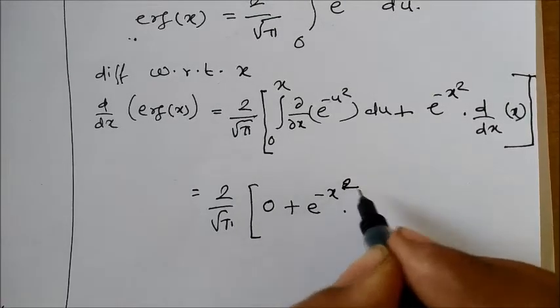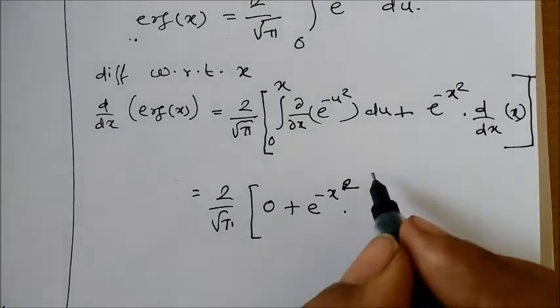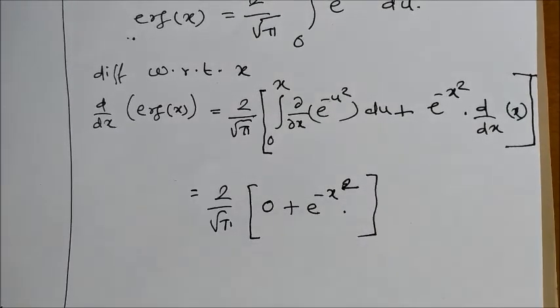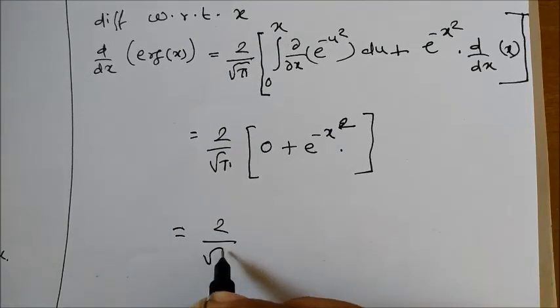times dx/dx is 1, and the remaining part is 0. So we will have this as 2/√π